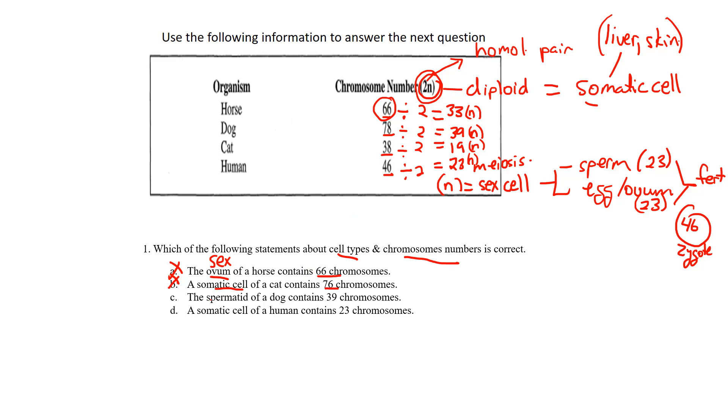Now C, the spermatid, which again is a sex cell, of a dog contains 39. We know that a dog somatic cell contains 78. Divide that by 2, we end up with 39. That is correct. When we write all these numbers out really quickly, we can go through this question very simply. You don't have to do the math for each individual stem of the question, which often people get lost in.